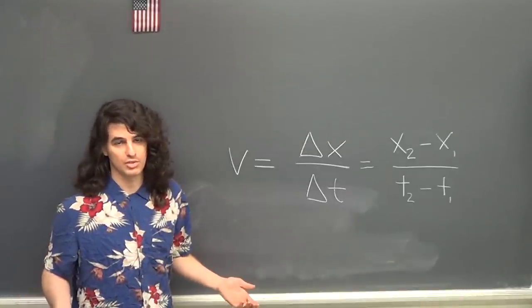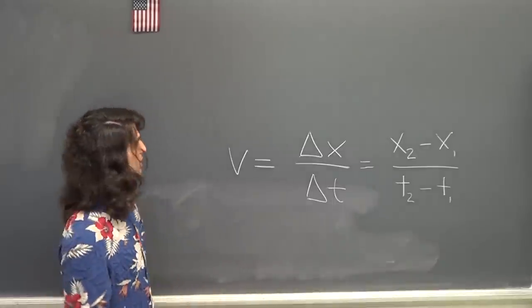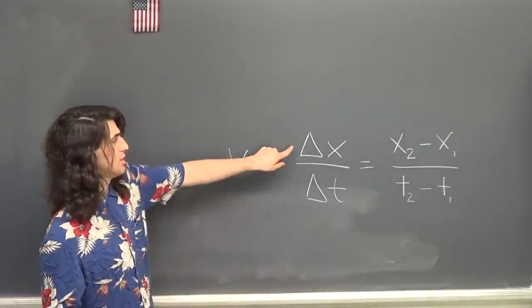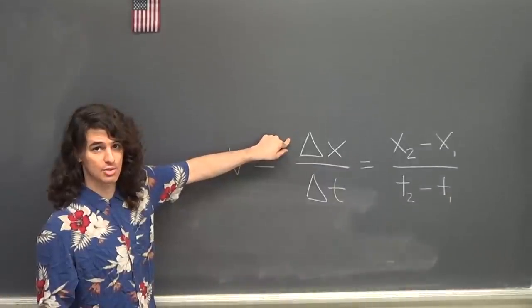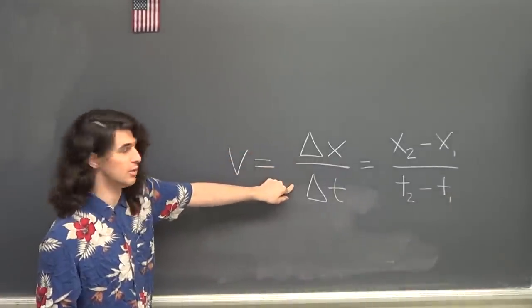For instance, a car between two points like St. Louis and Rolla. In order to calculate V, you have to know the delta x and the delta t. This is how much distance the car has moved and how long it took to do it.